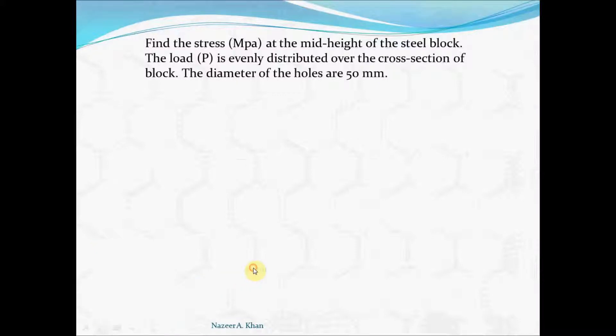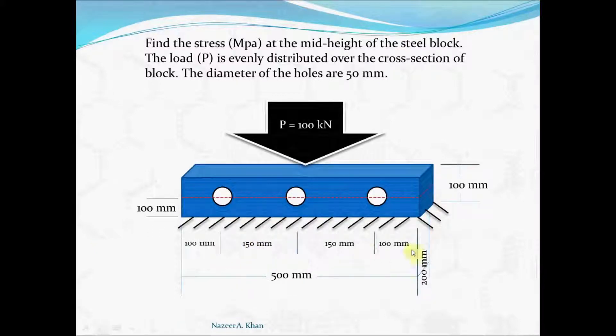Let's bring in the diagram. When we look at this, we can see that we have a steel block in blue on a solid surface, and we have a load of 100 kilonewtons applied evenly across the top of the block. We have the dimension of the block as 500 by 200 by 100, and halfway up the height we have three holes. The center of the holes are right at the mid-height of the block.